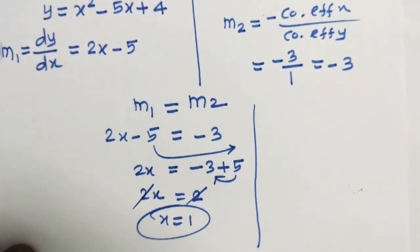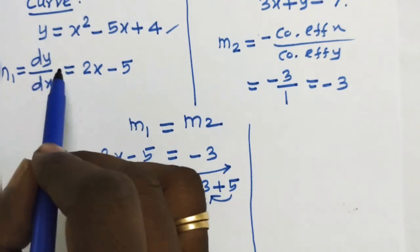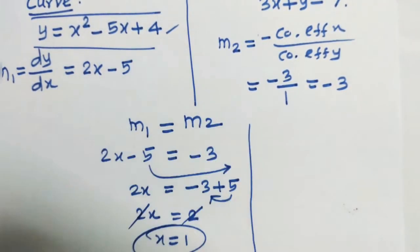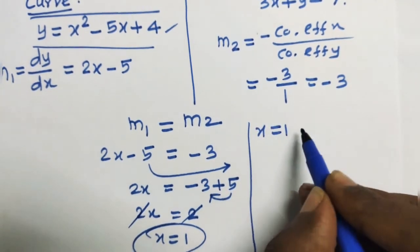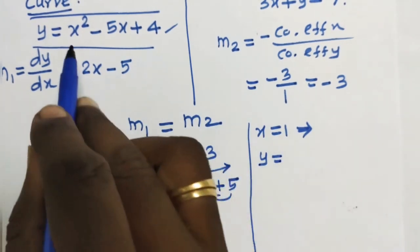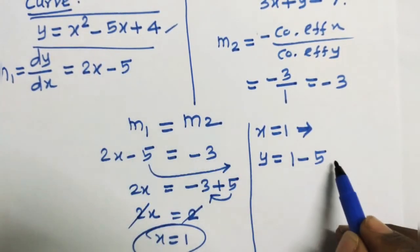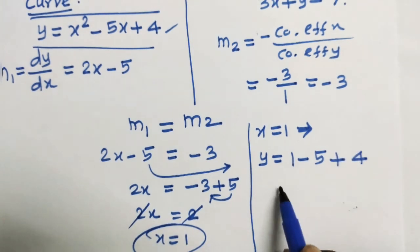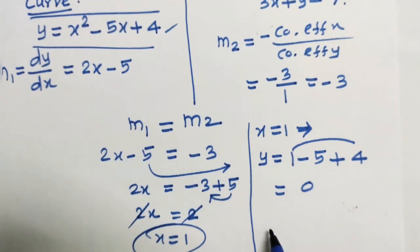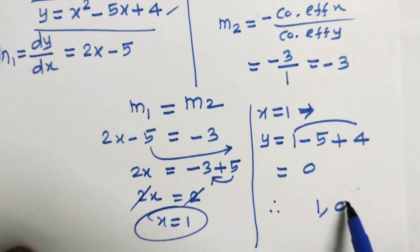Value of x is equal to 1. Now we have to find the point on the curve. x is equal to 1. That is 1 minus 5 plus 4 which is equal to 1 plus 4 is 5, 5 minus 5 is 0. Therefore, point on the curve is 1 comma 0.